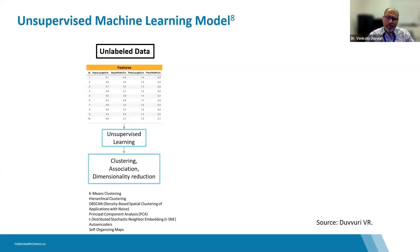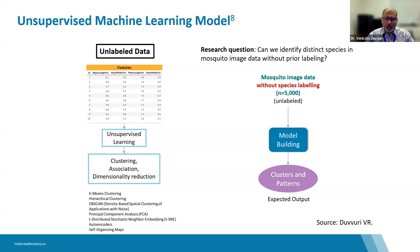If only unlabeled data are available — meaning only feature data — we use unsupervised learning to create clusters, associations, and dimensionality reduction. Unsupervised learning requires no prior knowledge or training data. In this toy model, unsupervised learning can identify similar or distinct clusters of mosquito image data based on their features.